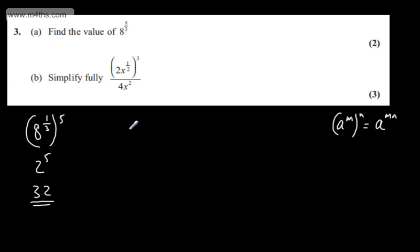So I've got 2 to the first power, which we're going to cube, so that will give me 2 to the power of 3. Then we've got x to the half raised to the third power, multiplying now we'll have x to the power of 3 over 2.